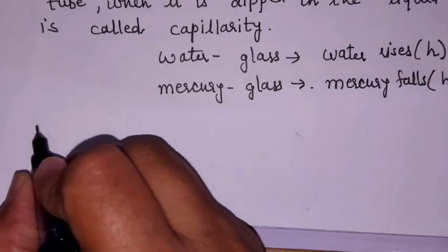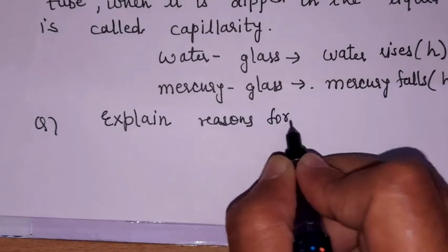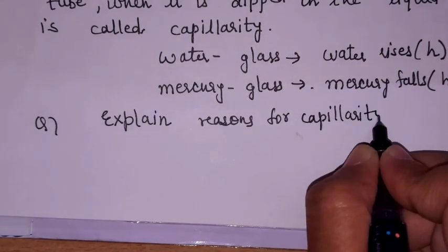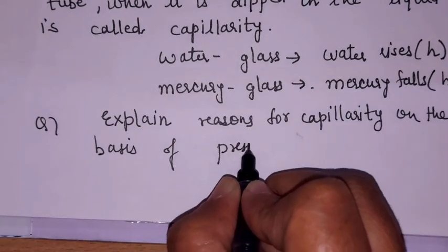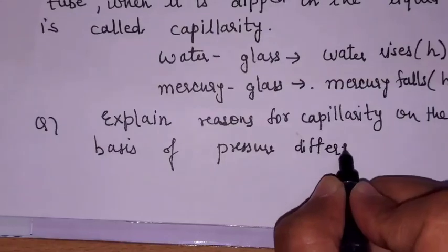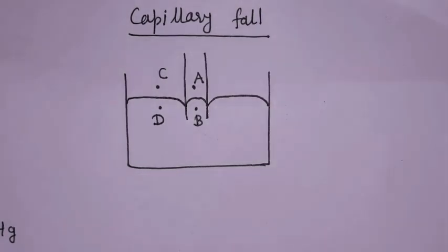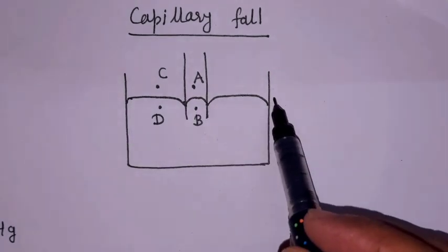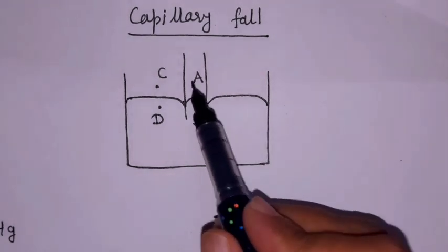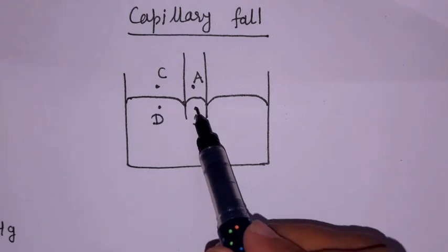This expression is called the reason for capillary fall. We may write a board question: explain the reasons for capillarity on the basis of pressure difference. This is a broad-category question. Let's first take the reason why mercury falls in a capillary tube. For this discussion, we consider four points — A, B, C, and D — where the convex surface is formed whenever mercury touches the solid walls.